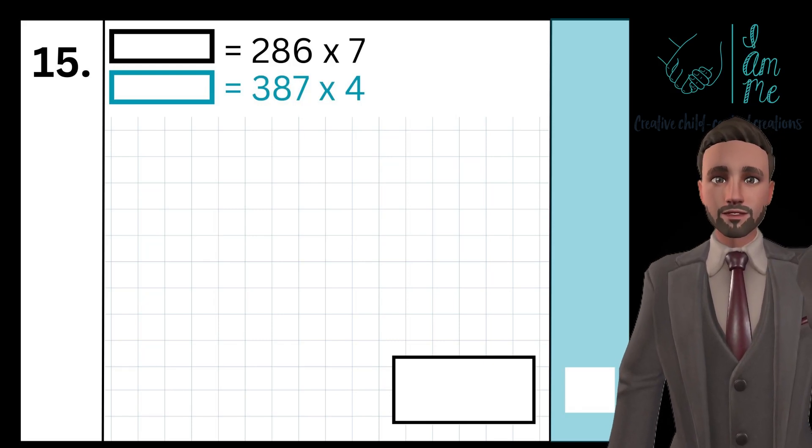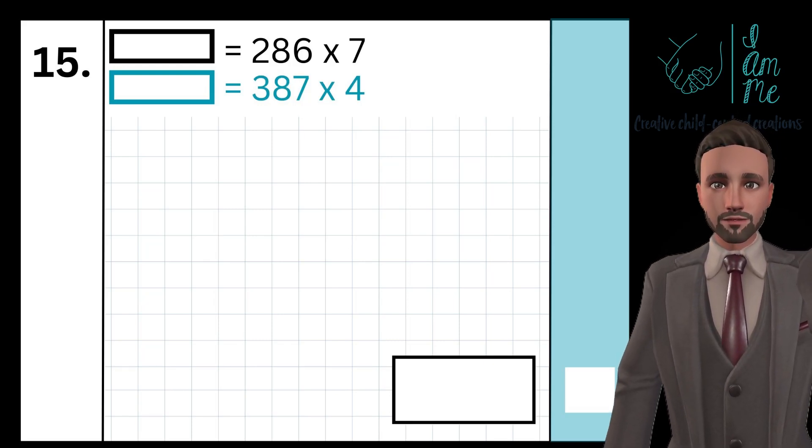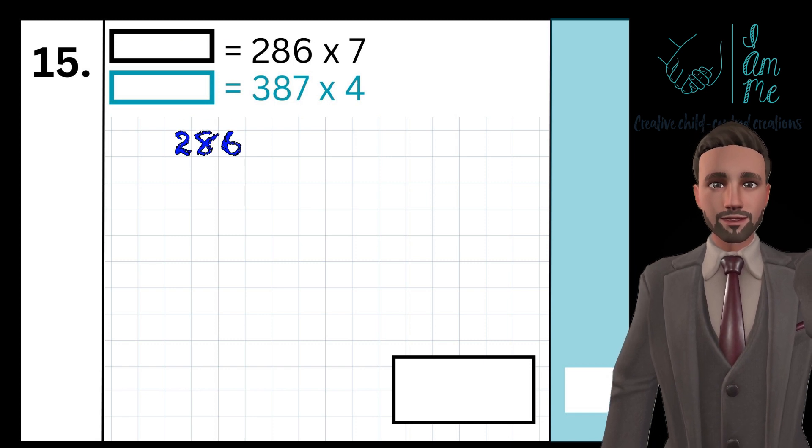How to multiply. First, lay out the equation in a column formation with the number you're multiplying on top and what you're multiplying by underneath.